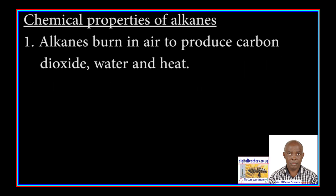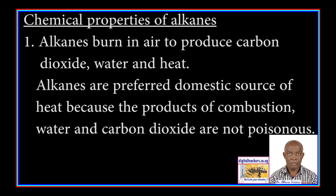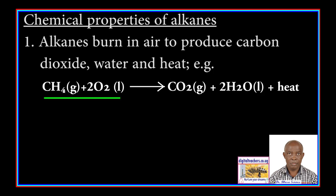1. Alkanes burn in air to produce carbon dioxide, water, and heat. Because they produce a lot of heat, they are used as fuel. Alkanes are a preferred domestic source of heat because the products of combustion — water and carbon dioxide — are not poisonous.